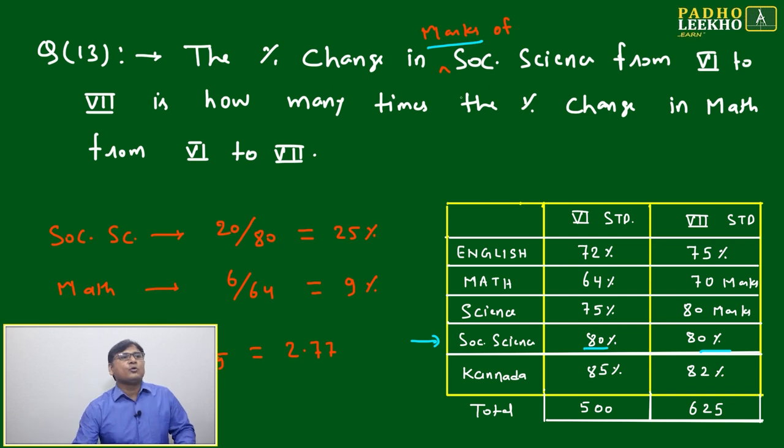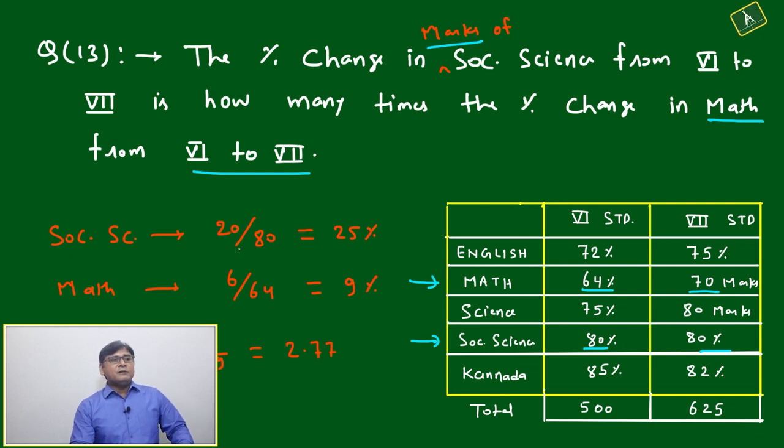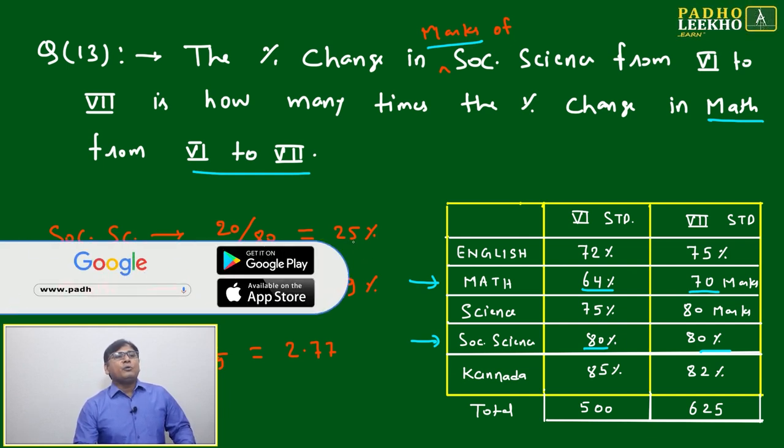One more line: percentage change of Social Science from six to seven is how many times the percentage change of math from six to seven. We have to deal with four data points: Social Science and Math, both for VI and VII. First we'll look at Social Science. Social Science will become 20 by 80, which is 25%. How can we say it is 20 by 80?